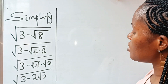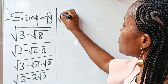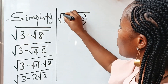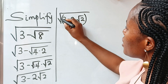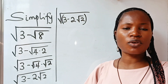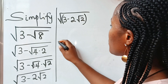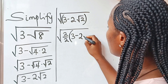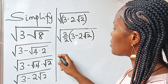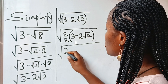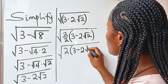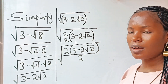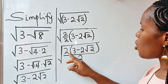Now we continue. This can be written as square root of three minus two root two multiplied by one. That one can be written as two over two. So we can now write this as square root of two over two multiplied by three minus two root two, which gives us square root of two times the bracket three minus two root two, divided by two.